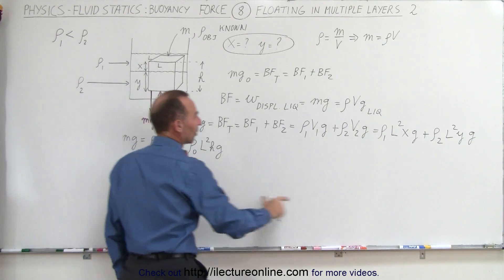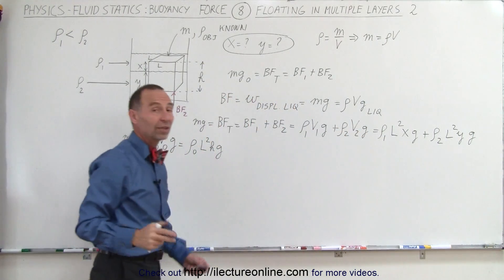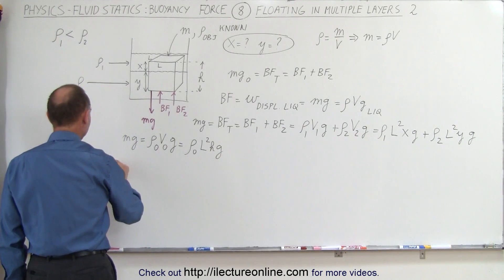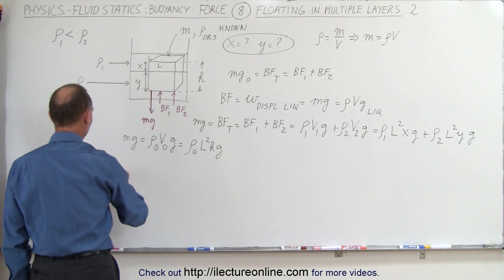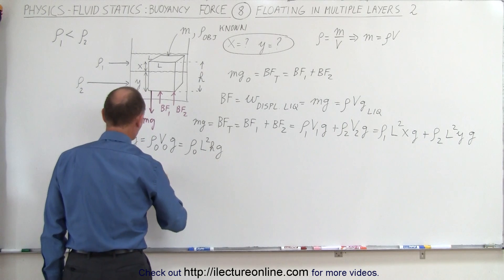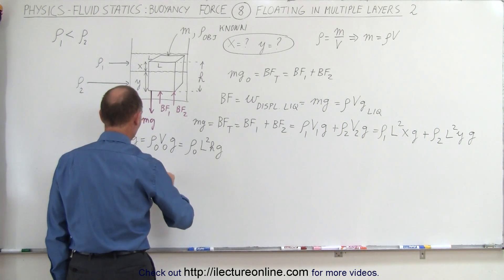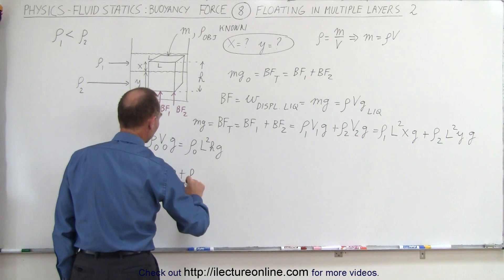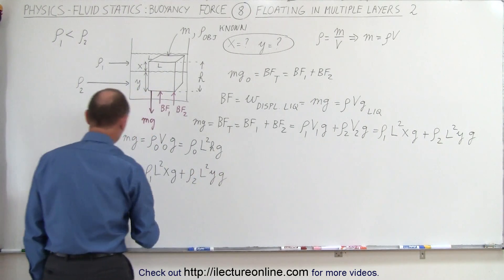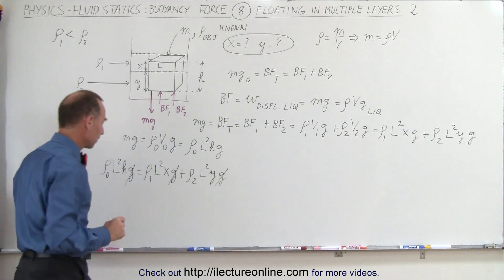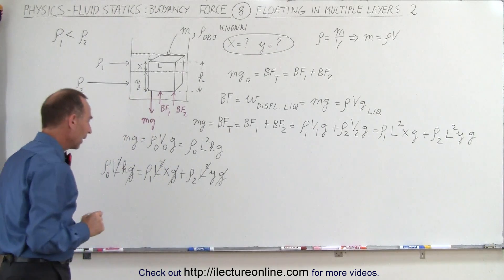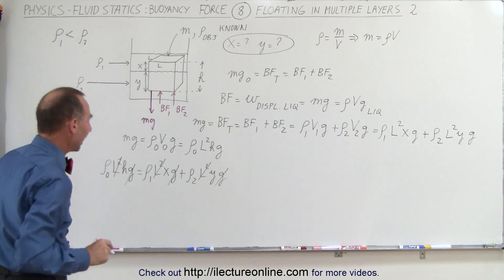We know that this must equal that, so let's set them equal to one another. We can then write that density of the object times l²h times g is equal to density 1 times l²x times g plus density 2 times l²y times g. Then we can see that the g's cancel out and the l²'s cancel out.